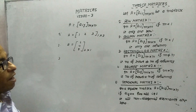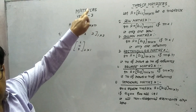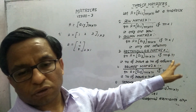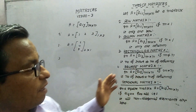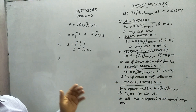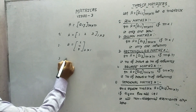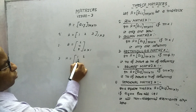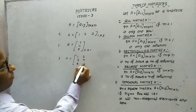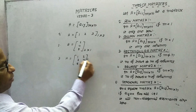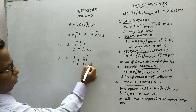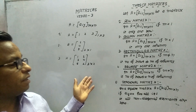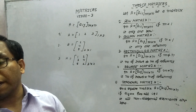Number 3: rectangular matrix. If M is not equal to N — that is, the number of rows is not equal to the number of columns — then it is known as a rectangular matrix. Example: [1, 2; 3, 4; 5, 6]. How many rows? 3. How many columns? 2. Since 3 is not equal to 2, this is a rectangular matrix.